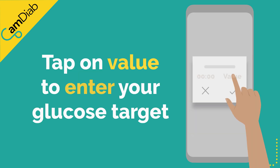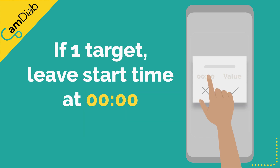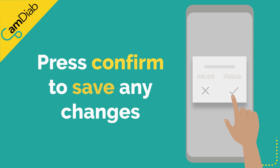Tap on the value and use the keypad to enter your personal glucose target. If you wish to have one target across the 24 hours of the day, please leave the start time at midnight or 0100 hours. Press Confirm to save any changes.